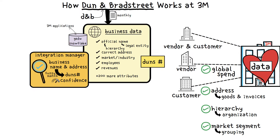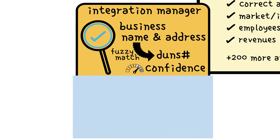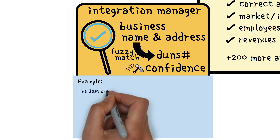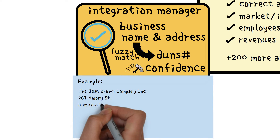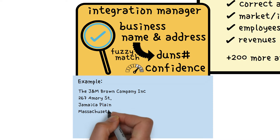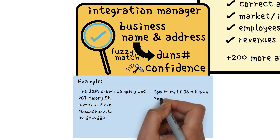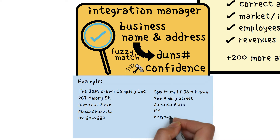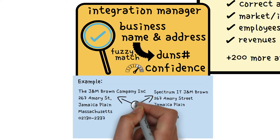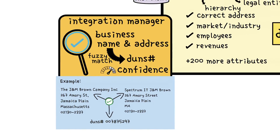This type of matching is sometimes referred to as fuzzy matching. For example, customer 1, the J&M Brown Company at 267 Armoury Street, Jamaica Plain, Massachusetts with a zip code of 02130-2337, and customer 2, Spectrum IT J&M Brown, 267 Armoury Street with the same city, state, and zip, would both map to the same DUNS number of 007-875-297.